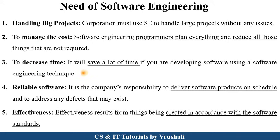The next need is to decrease time. We use different software like reservation applications, train booking, airline bookings, and calculators — all useful for users and saving a lot of time. If you develop software using specific software engineering techniques, it saves a lot of time for users. The next need is reliable software — it is the company's responsibility to deliver the software product on the scheduled time as discussed with the customer. The last need is effectiveness — every software developed has accuracy and is easy to use for every user as per their need.